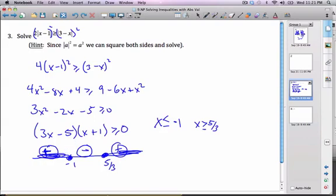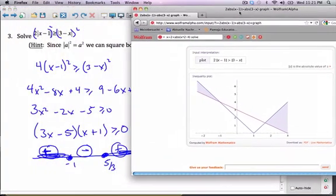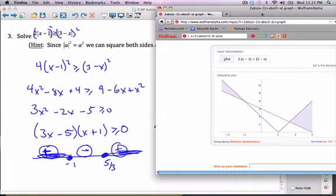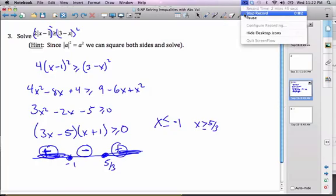If I want to consider what the graph will look like, I put it on Wolfram Alpha already. What we can see is here's the one graph, we want the blue graph to be above the red graph. That happens here at negative 1, and at 5 thirds here, the blue graph is bigger than the red graph.